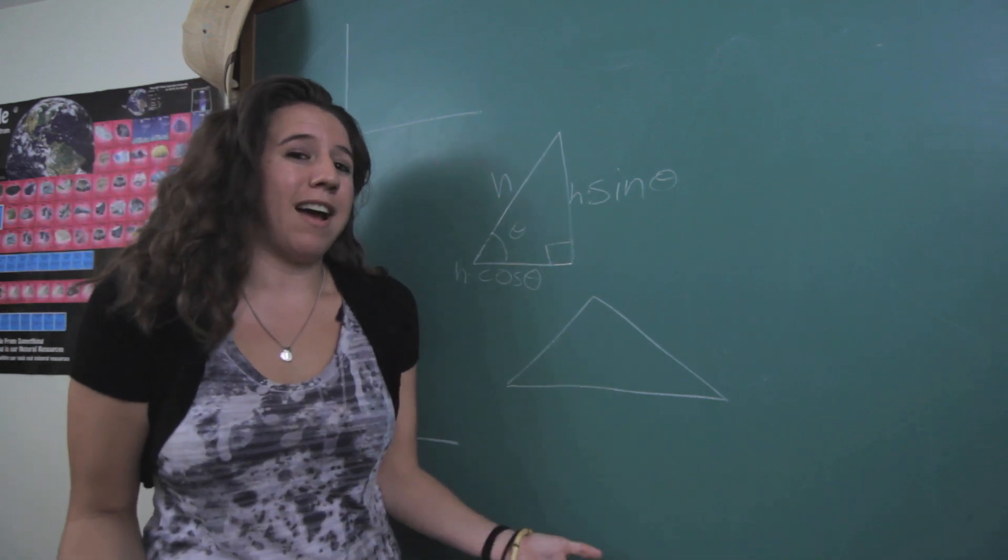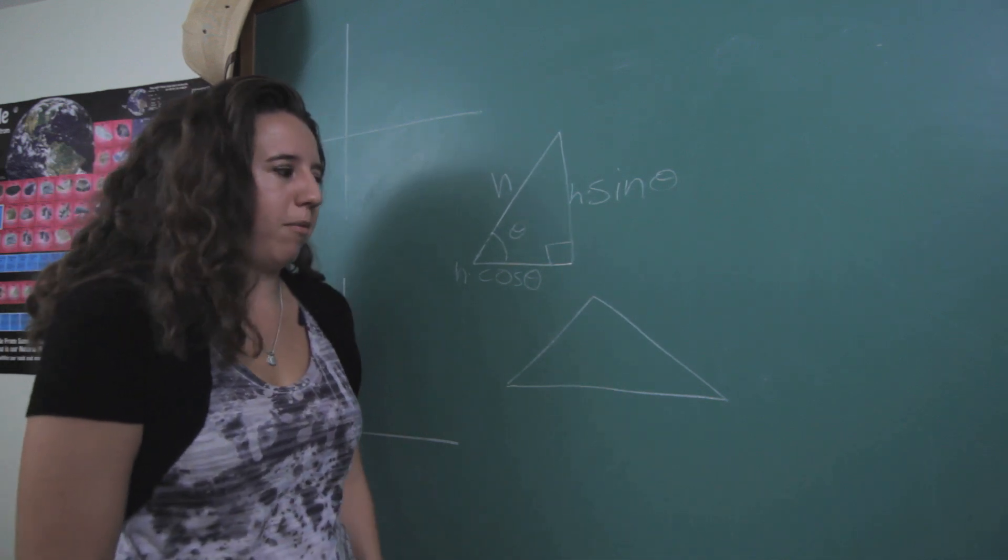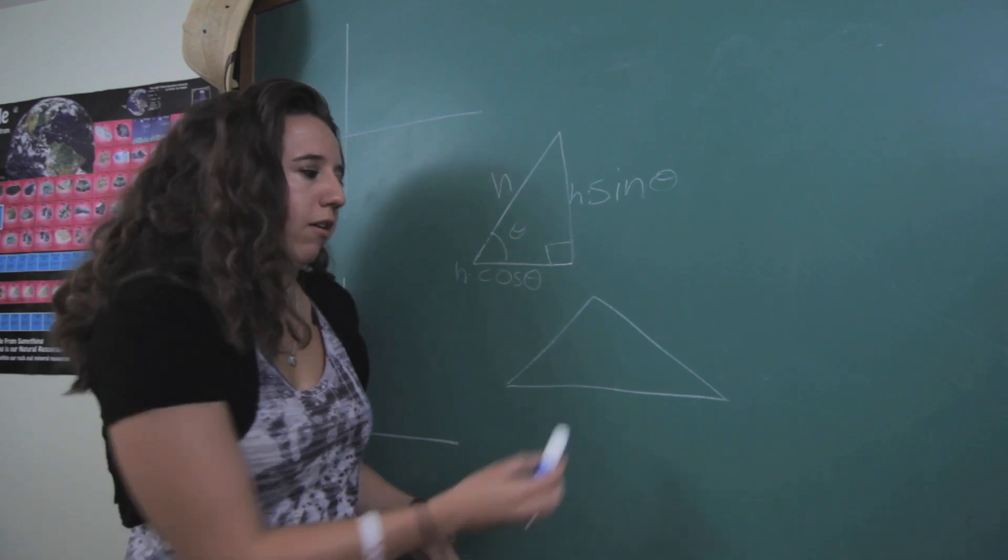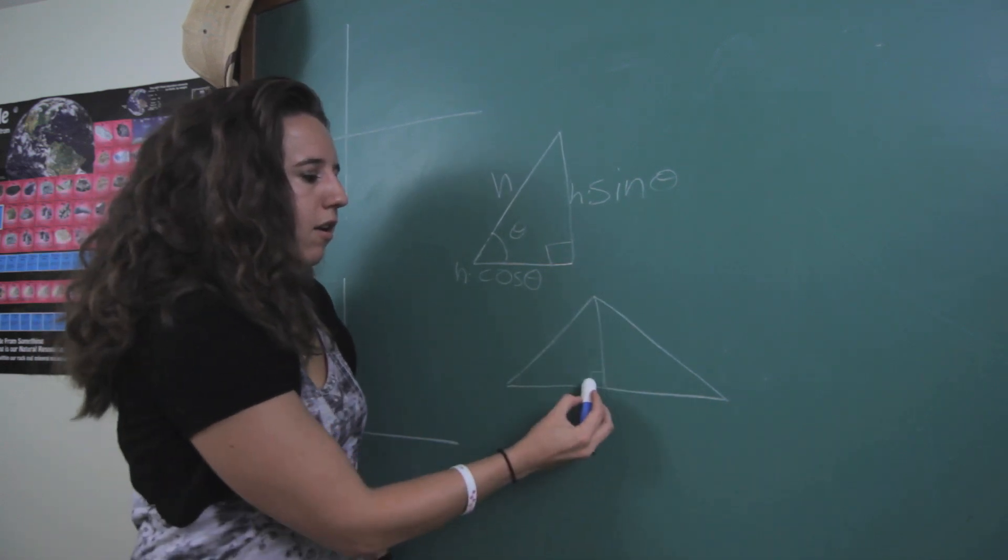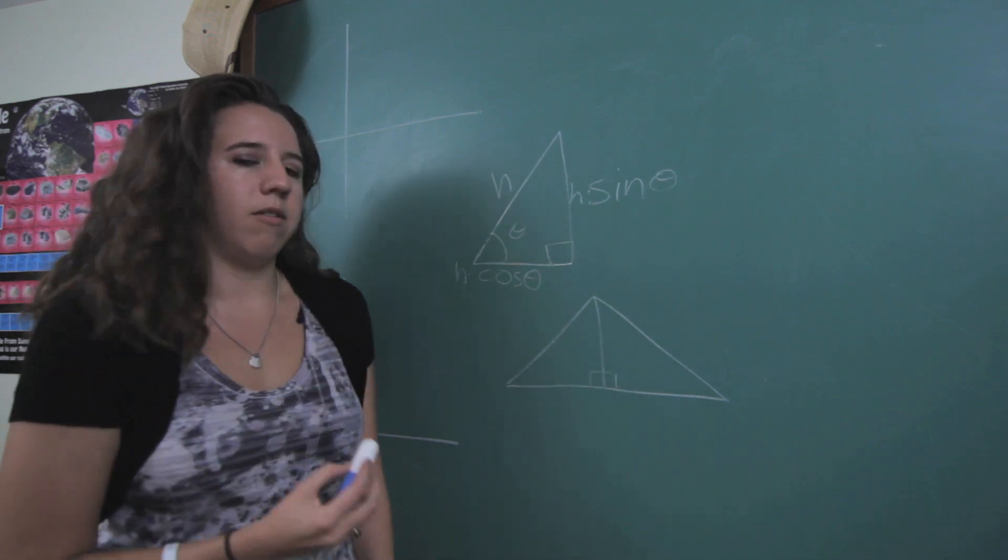So what if you don't have a right triangle? Well that's no problem because you can turn any triangle into two right triangles by just dropping a vertical line down and turning it into two right triangles.